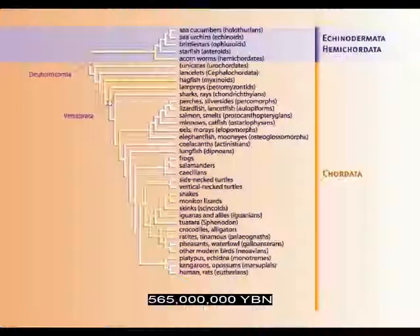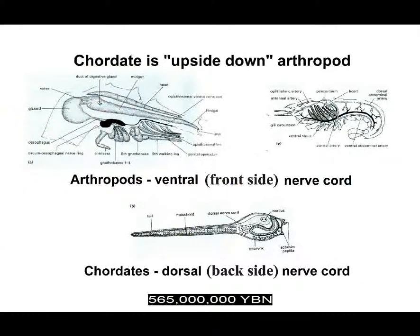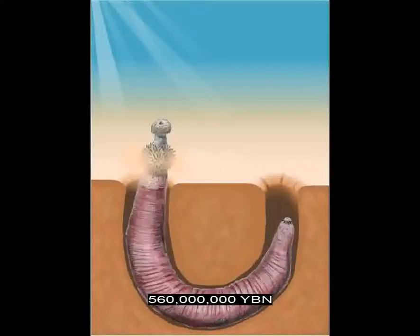Deuterostome phylum Chordata evolves. Chordates are a very large group that includes all tunicates, fishes, amphibians, reptiles, mammals, and birds. Chordates get their name from the notochord — the cartilage rod that runs along the back of the animal in the embryo if not in the adult. The ancestor of all chordates evolves upside down — unlike earlier invertebrates, this ancestor and all vertebrates have their nerve cord near their back and their heart near their front. Earliest extant chordate: tunicates evolve — sea squirts. Protostomes Ecdysozoa evolve — animals that molt, losing their outer skin as they grow — ancestor of roundworms and arthropods, which includes insects and crustaceans.